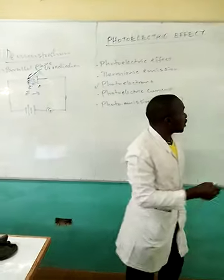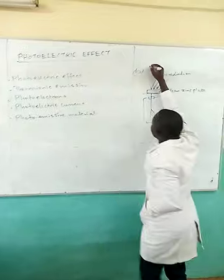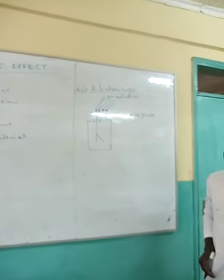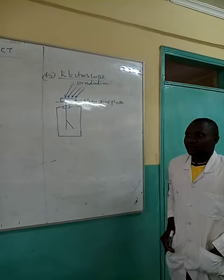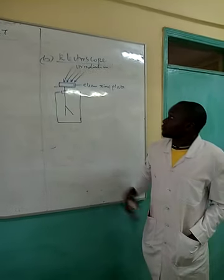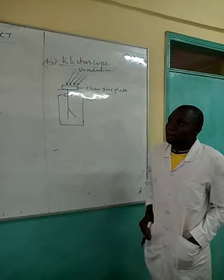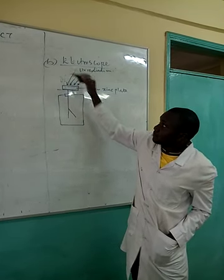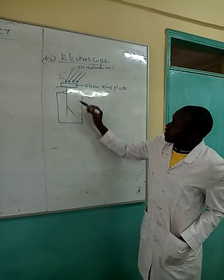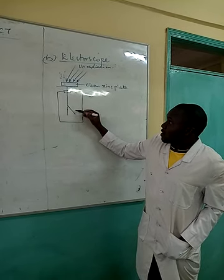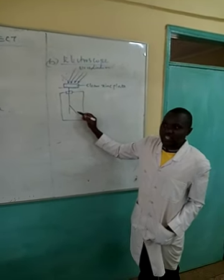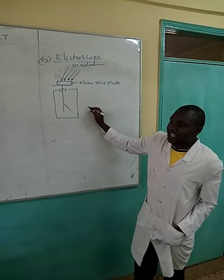The second method of demonstrating this is by using a gold leaf electroscope. We can look at the case where the electroscope is uncharged. When UV radiation falls on a clean zinc plate placed on the cap of an electroscope, the UV radiation will eject electrons. The emitted electrons will repel more electrons in the leaf and the plate, causing the divergence to increase. So in an uncharged electroscope, the divergence increases.